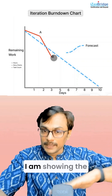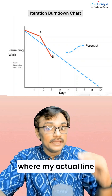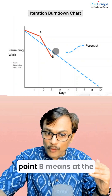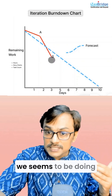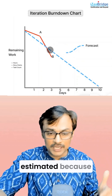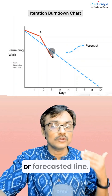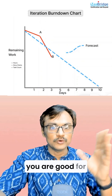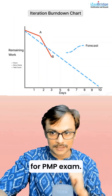At point B, I'm showing the reverse situation, where the actual line is below the forecasted or expected line. At point B, at the end of day three, the team is doing faster than initially estimated because the red line is below the expected line. Keep these two things in mind and you are good for your iteration burndown chart questions on the PMP exam.